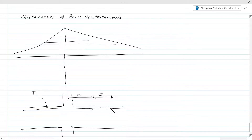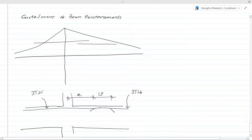Here we have 3T25 bars and we are going to curtail it to 3T16. Continuing the same 3T25 reinforcement won't be required beyond a certain point, therefore you can curtail the reinforcement. Also, sometimes it is not economical to maintain the higher reinforcement area throughout the length, so we can do the curtailment like this.